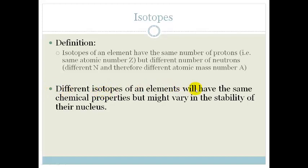Different isotopes of elements will have the same chemical properties, but they might vary in the stability of the nucleus. So in other words, some of the atoms because they have more neutrons might be less stable.